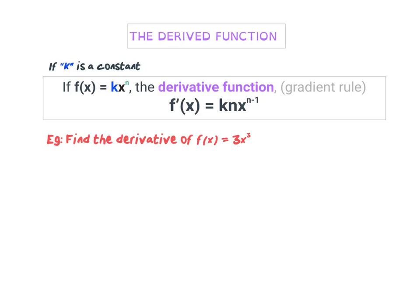Today's lesson we're starting calculus. The first thing we're going to look at is the derived function or the derivative. The process of finding the derivative function is called differentiation. What the derivative is, is you're finding a formula that can find the gradient at any point. In a linear graph you have the same gradient all the time, but in a quadratic the gradient changes at different points. So we can get a rule to find the gradient at any time — that's called the derivative.